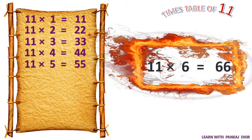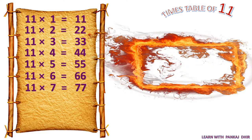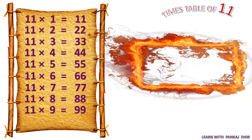11 sixes are 66. 11 sevens are 77. 11 eights are 88. 11 nines are 99. 11 tens are 110.